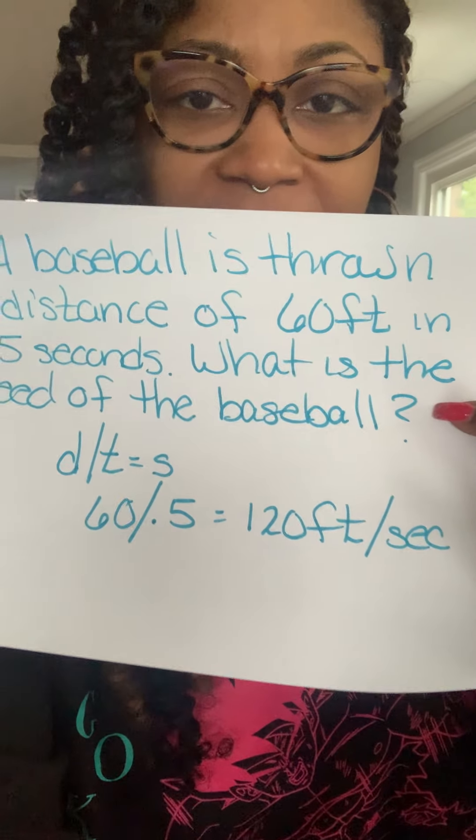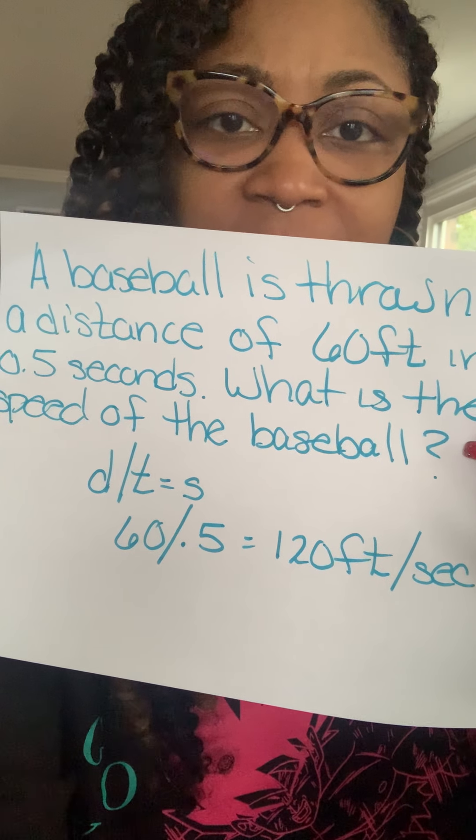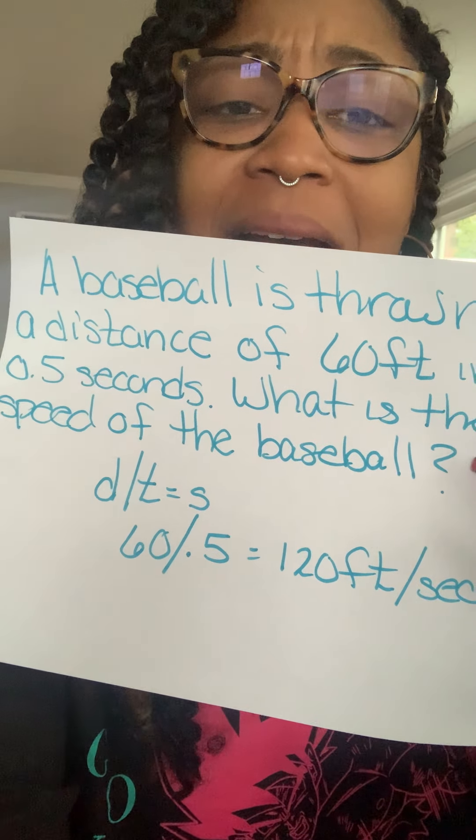Let's give an example. A baseball is thrown a distance of 60 feet in five seconds — what is the speed of the baseball? You're going to take the distance, which is 60 feet, and divide by the time, five seconds. When you do that, you should get 12 feet per second.